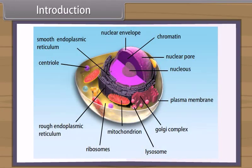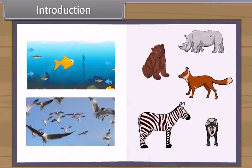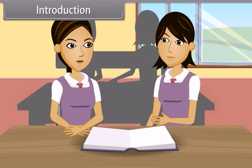Most of the animals are mobile. Animals are aquatic, e.g. fishes, or terrestrial, e.g. reptiles, mammals, etc., or aerial, e.g. birds, on the basis of their habitat. On the basis of level of organization, animals either have cellular organization, e.g. sponges, or tissue organization, e.g. coelenterates.